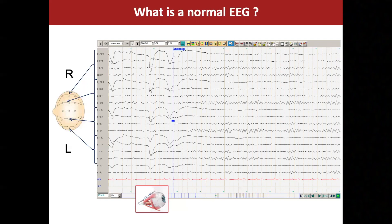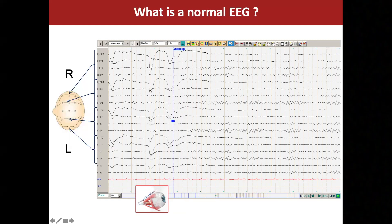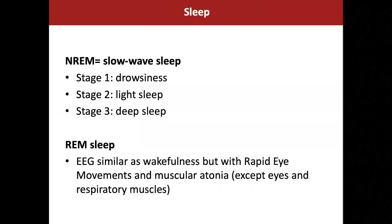A normal EEG shows the right side of the brain in the upper channels and the left side in the lower channels. You can see alpha rhythms in the posterior electrodes that are attenuated by eye opening. There is a nice posterior-to-anterior gradient, nice free activity, and no slow activity when viewing 10 seconds per page. This is how EEG looks in clinical recording during wakefulness; in sleep, the EEG changes a lot.